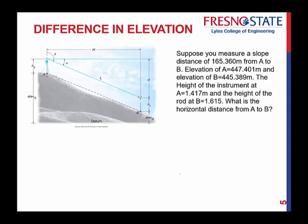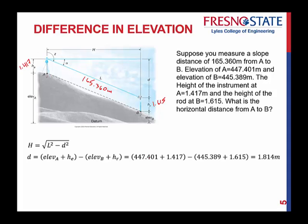So let's give an example. Suppose you measure a slope distance of 165.360 meters from A to B. The elevation of A is 447.401, and elevation of B is 445.389. The height of the instrument A is 1.417, and then the height rod is 1.615. And all I'm asking you here now is, what is the horizontal distance from A to B? So if we use that equation we just gave you, let's try and figure something out. First, we're looking for H. H is L squared minus D squared. That's just the Pythagorean theorem.